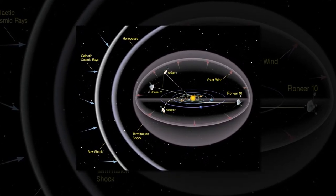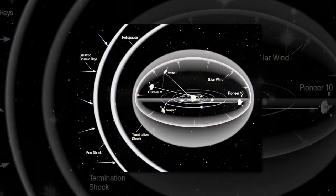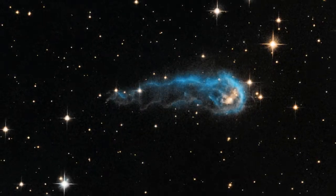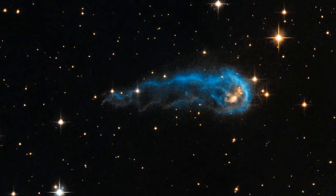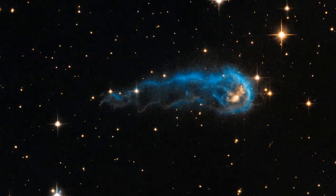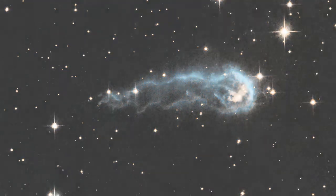The new paper is based on one particular theory of the origin of the IBEX ribbon, in which the particles streaming in from the ribbon are actually solar material reflected back at us after a long journey to the edges of the sun's magnetic boundaries.